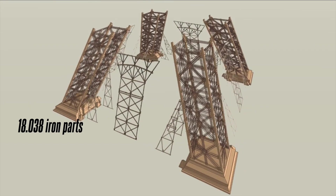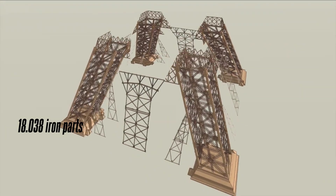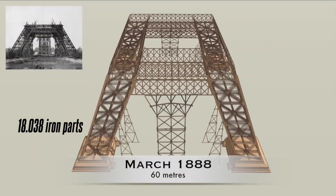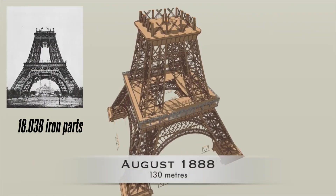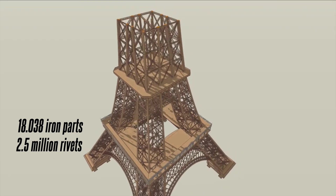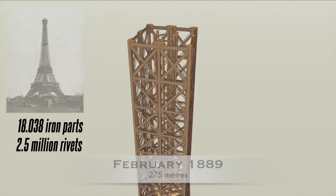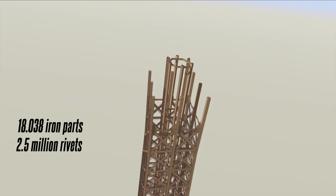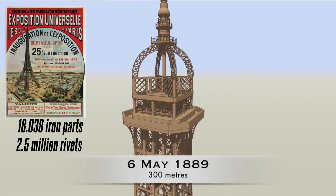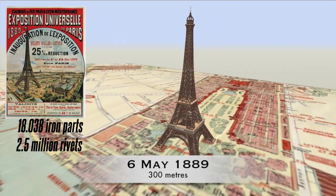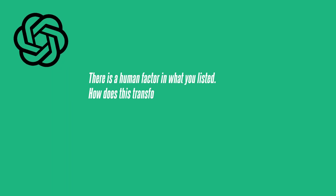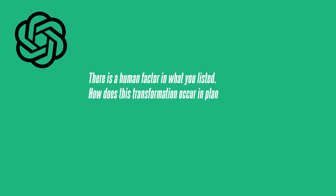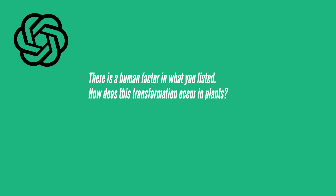The Eiffel Tower consists of 18,038 parts, connected with a total of 2.5 million rivets. Let's lay the foundation of its plan and let it rise slowly. I asked again: there is a human factor in what you listed — how does this transformation occur in plants?